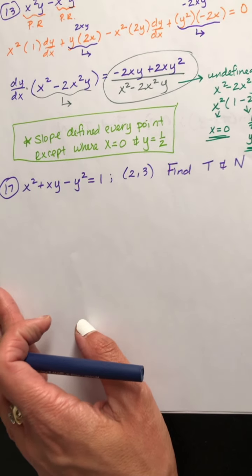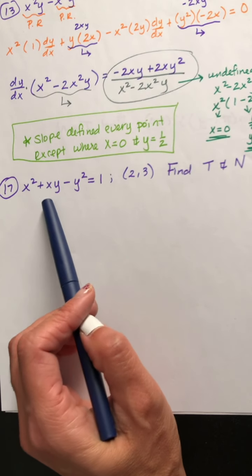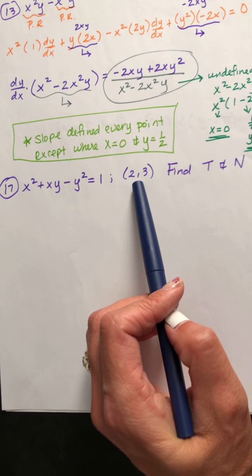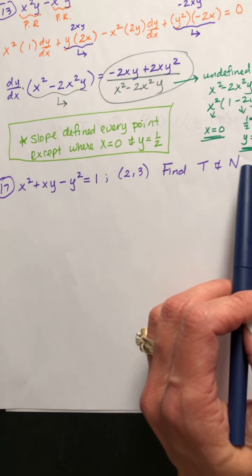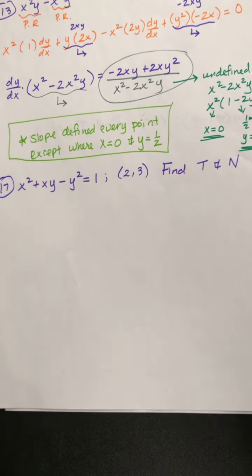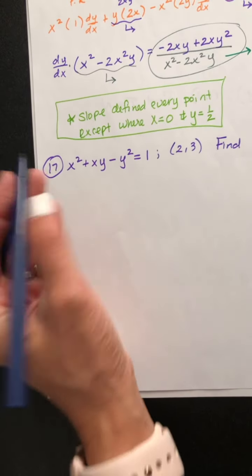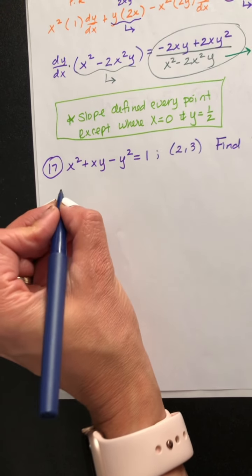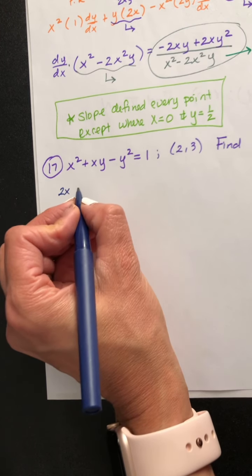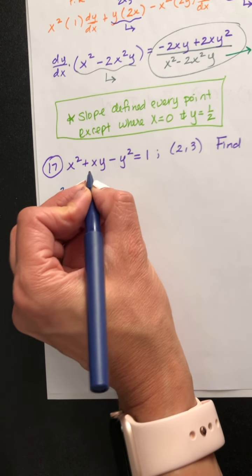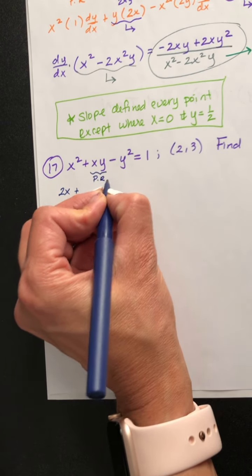Number 17. We need to implicitly differentiate at this point and find t and n — the equation of the tangent line and the equation of the normal line. So let's differentiate. The derivative of x squared using power rule is 2x, plus I have xy — that's x times y, so I'll have to use product rule on it.